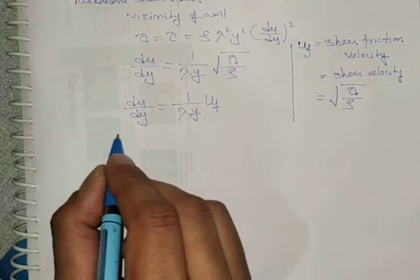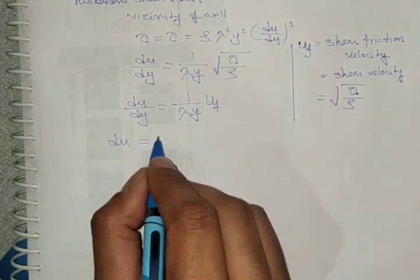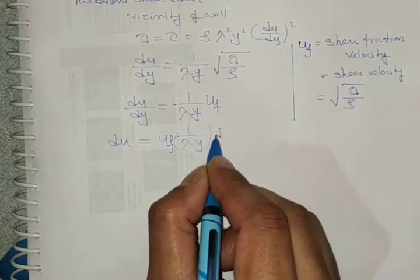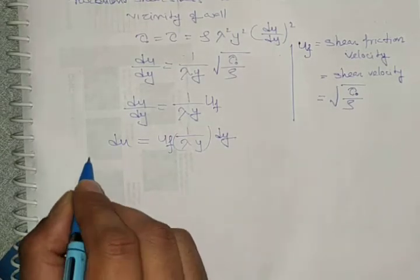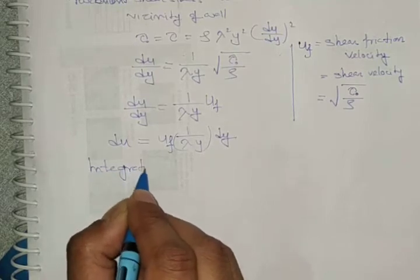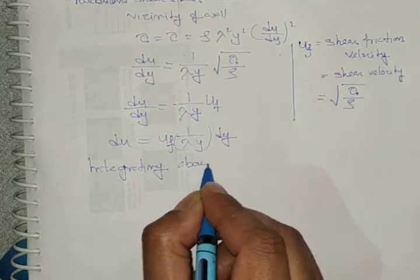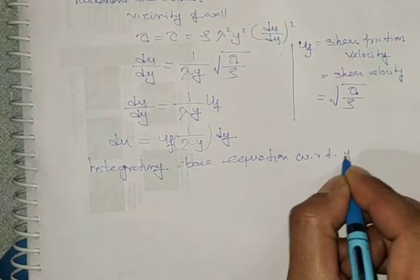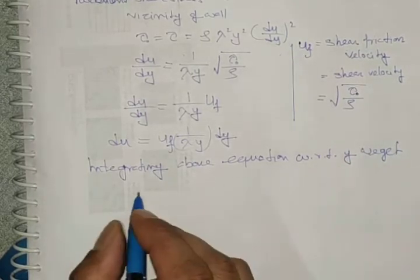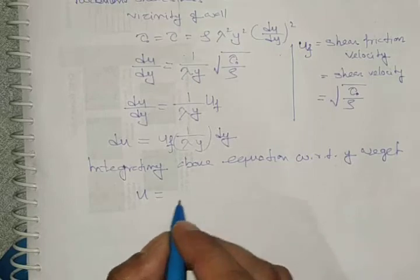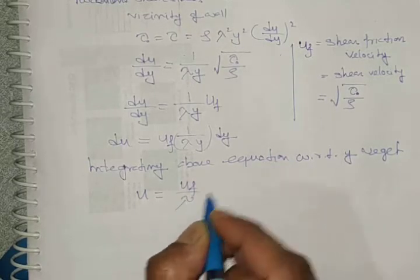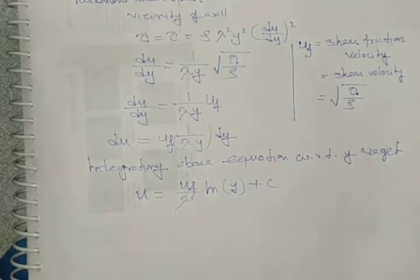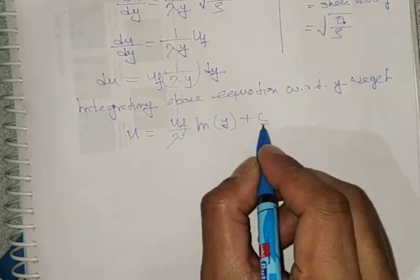From this equation, du = (u_f / λ)·(dy/y). By integrating the above equation with respect to y, we get u = (u_f / λ)·ln y + C.